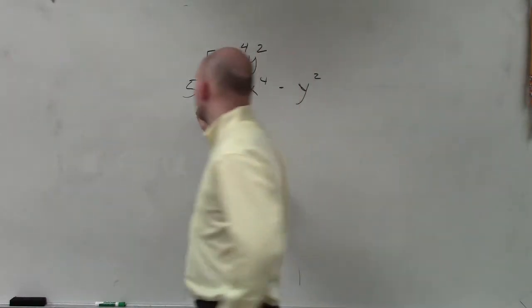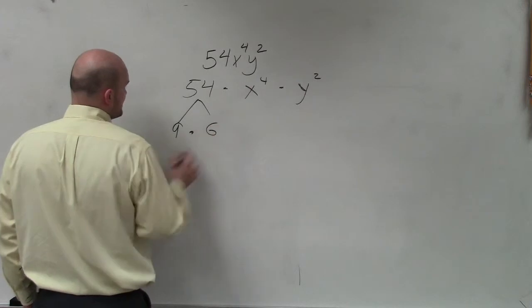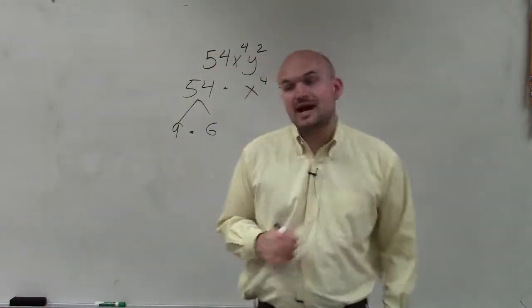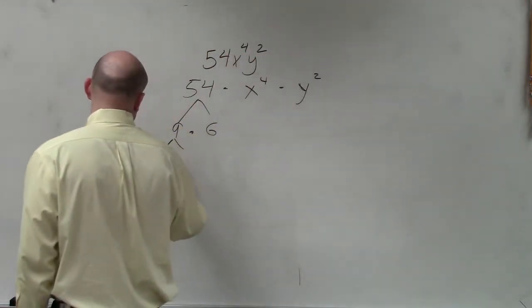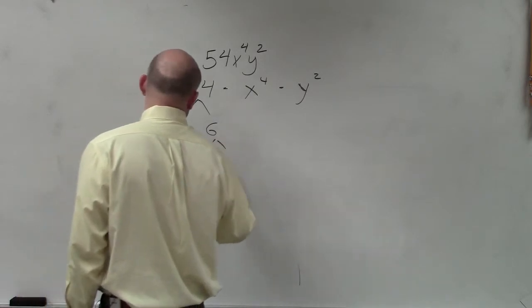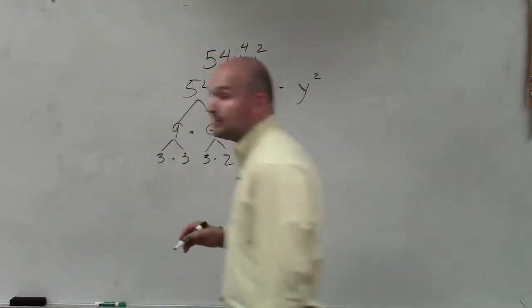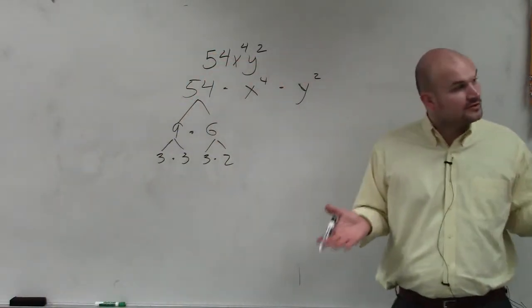So 54, I can break down into 9 times 6. Then I can further break down 9 as 3 times 3, and 6 as 3 times 2. Therefore, you guys can see, I cannot break down 3 anymore, and those are prime numbers.